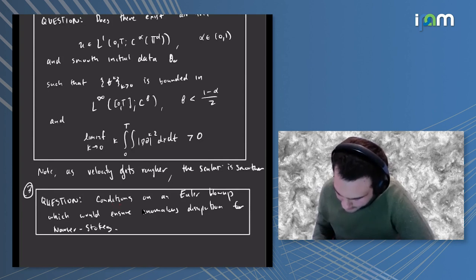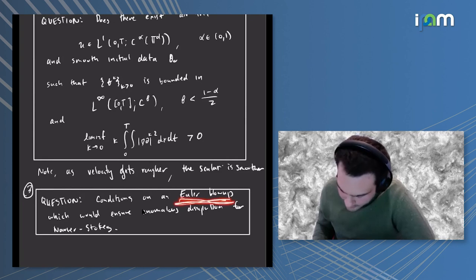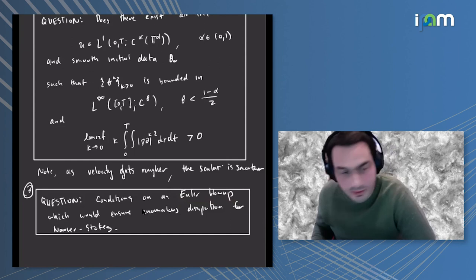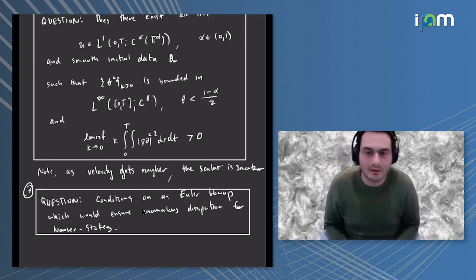Finally, could one establish a similar lemma that I showed earlier that relates a putative Euler blow-up to anomalous dissipation for Navier-Stokes? Thank you.